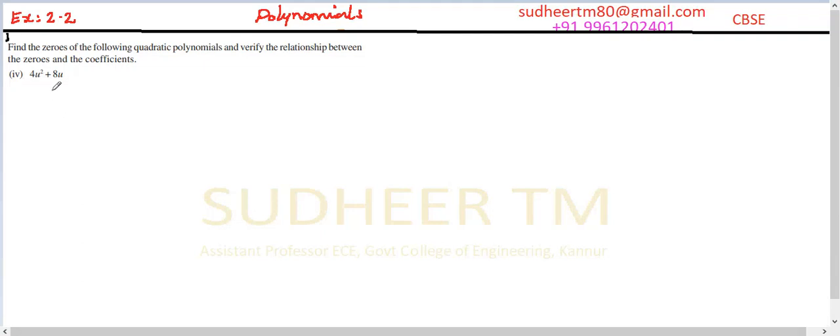Question number one, exercise 2.2 polynomial, fourth question. Find the zeros of the following quadratic polynomials and verify the relation between the zeros and coefficient.